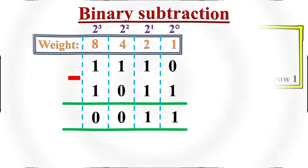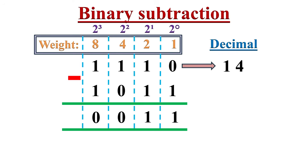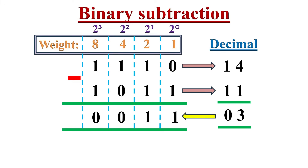Now let's convert these binary numbers into decimal numbers to check the answer. The decimal equivalent of the first binary number 1110 equals 8 plus 4 plus 2 plus 0, which is 14. The decimal equivalent of 1011 is 8 plus 0 plus 2 plus 1, which is 11. So 14 minus 11 equals 3, which is nothing but 11 in binary. Hence our binary subtraction is correct.